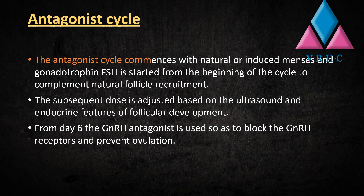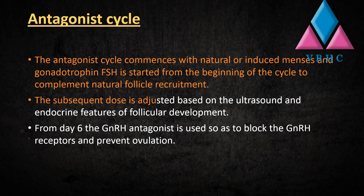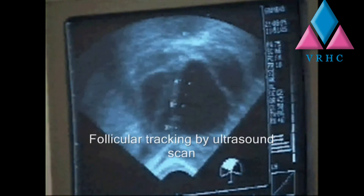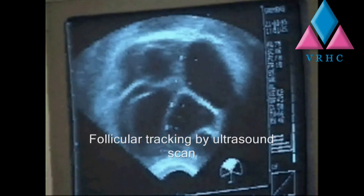The antagonist cycle commences with natural or induced menses, and gonadotropin FSH is started from the beginning of the cycle to complement natural follicle recruitment. The subsequent dose is adjusted based on ultrasound and endocrine features of follicular development. From day six, the GnRH antagonist is used to block the GnRH receptors and prevent ovulation during the process of ovarian stimulation.